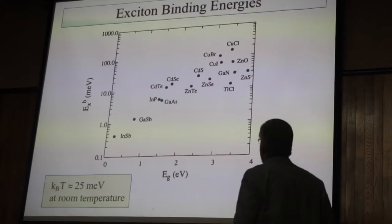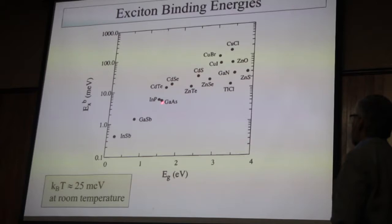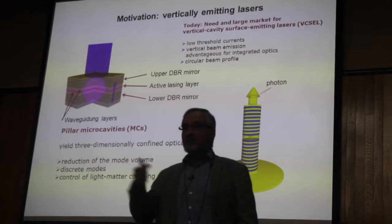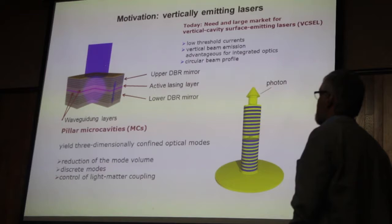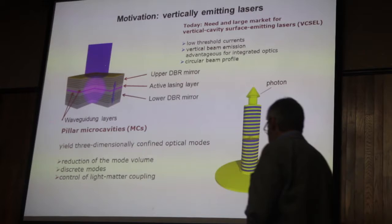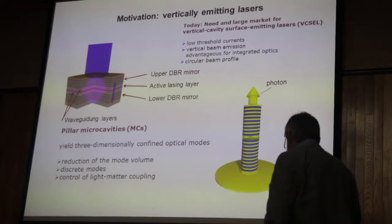This plot shows different exciton binding energies for various materials. Gallium arsenide has an exciton binding energy of less than 10 meV. Zinc selenide has a binding energy of nearly 30 meV. Zinc oxide is an exception with 60 meV binding energy. Based on these exciton resonances, we investigated surface-emitting laser structures in Bremen. Gallium arsenide is also suitable for forming such cavities.